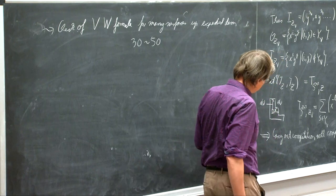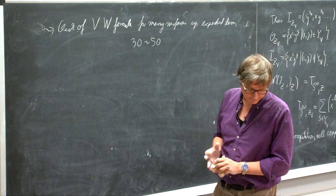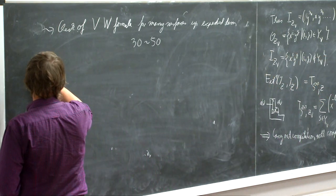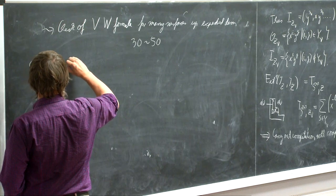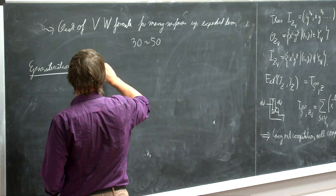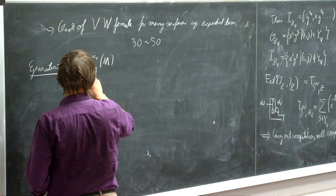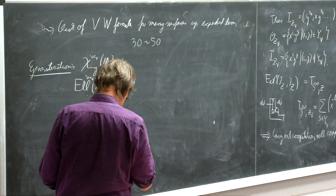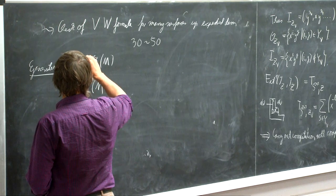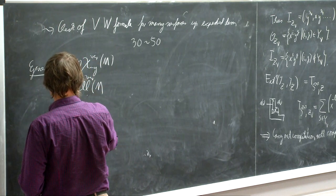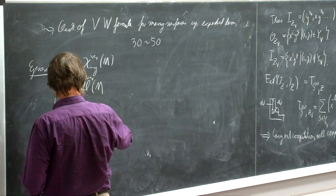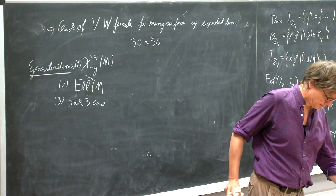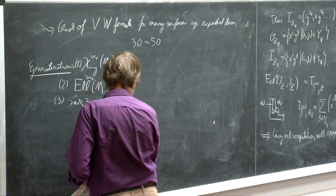And similarly, the same kind of computation you can do for the Chi-Y genus and you get this. So generalizations would be the Chi-Y genus, the elliptic genus, the cobordism class. And then I can maybe briefly talk about the case of moduli spaces of rank 3 sheaves.